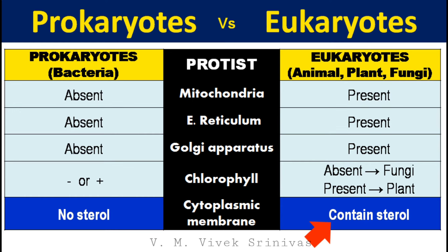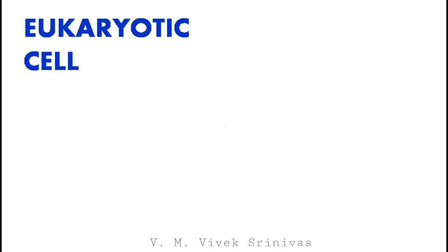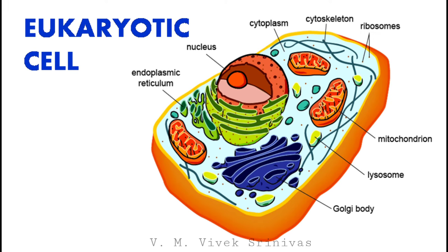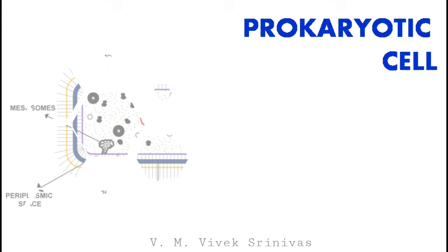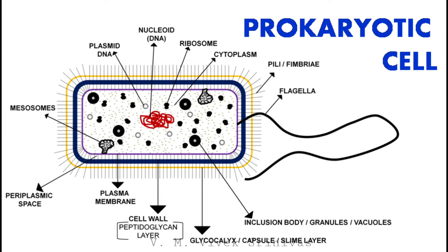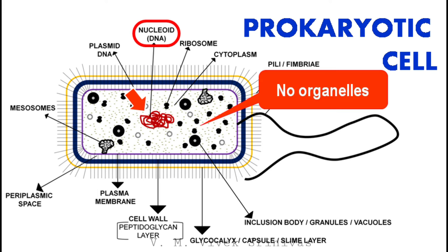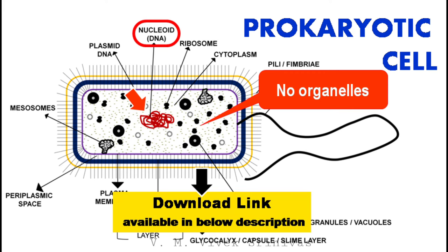In summary, eukaryotic cells possess a well-organized nucleus and membrane-bound organelles like mitochondria, endoplasmic reticulum, and Golgi apparatus in their cytoplasm. Bacterial cells do not possess a nucleus; instead they have nucleus-like material called nucleoid, and they do not have membrane-bound organelles. A schematic illustration of the structure of a bacterial cell is available as a downloadable link in the YouTube description below.